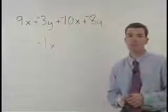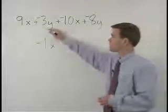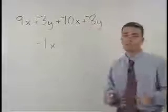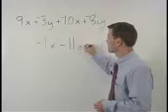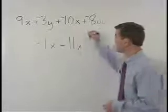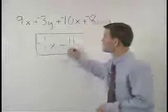Now let's combine our y terms. Negative 3y plus negative 8y simplifies to negative 11y. So our answer is negative 1x minus 11y.